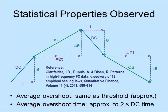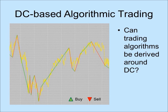We could design trading strategies around directional changes. Here is just one possibility: a trend follower would buy whenever an upturn directional change is confirmed, and sell whenever the next downturn directional change is confirmed. This simple trend follower will probably not make money, because on average overshoot size is approximately the same as the directional change threshold. But could this statistical property help us find profitable strategies? Probably yes, because this regularity has not yet been exploited by traders in the market.